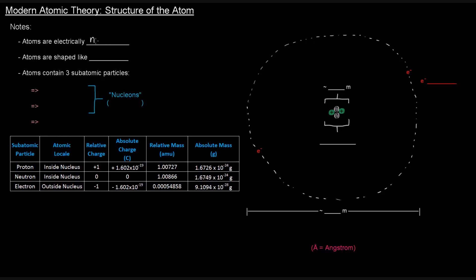Atoms are electrically neutral. That's one thing that we need to know. They have no charge. Another thing is that, as you can see to the right here, atoms are shaped like spheres. I've drawn a circle, but you can just imagine that in 3D.